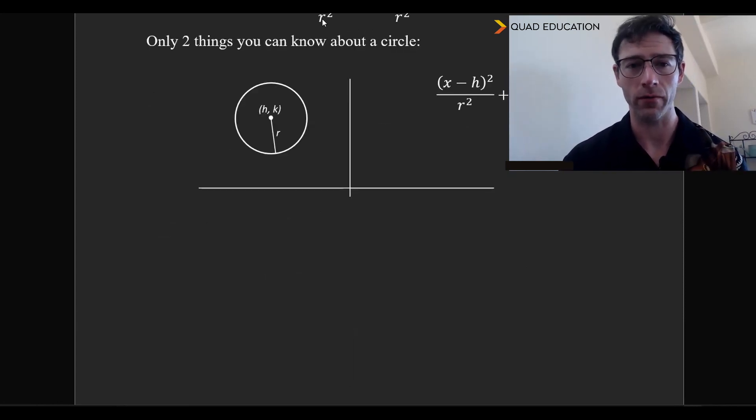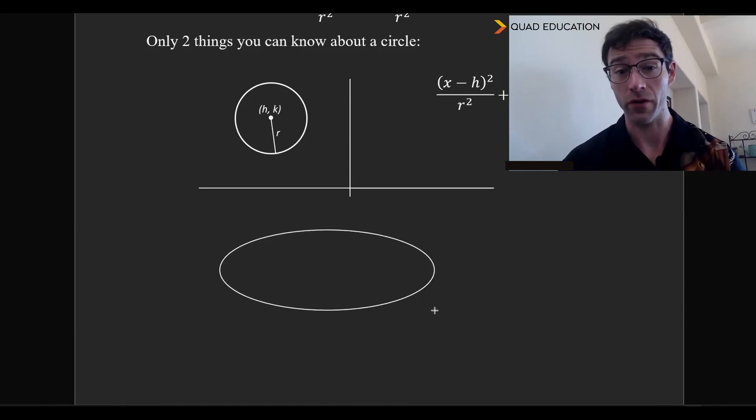So then let's talk about what an ellipse even is. A circle is perfectly round. Let's see if I can do a good circle there. And then an ellipse is anything that is squished.